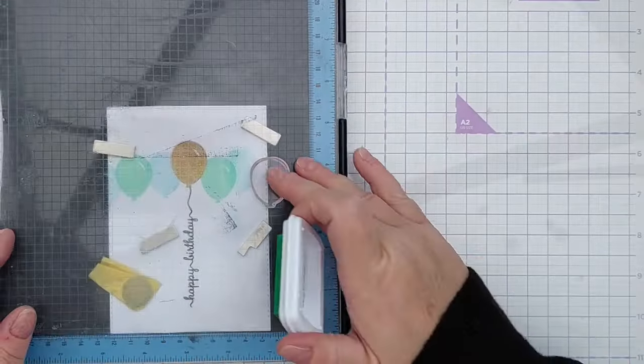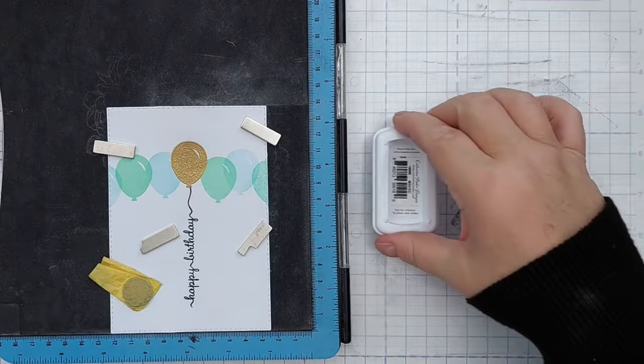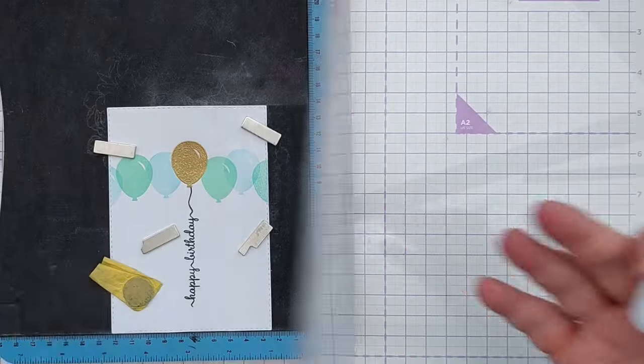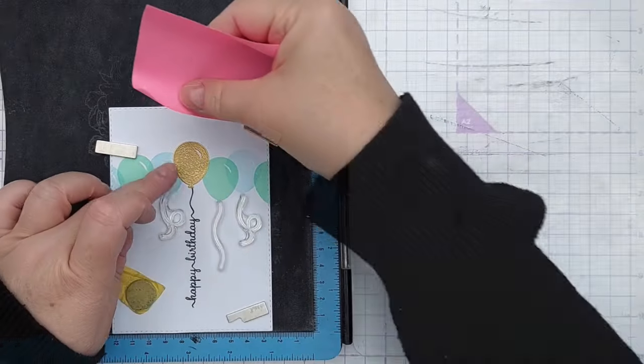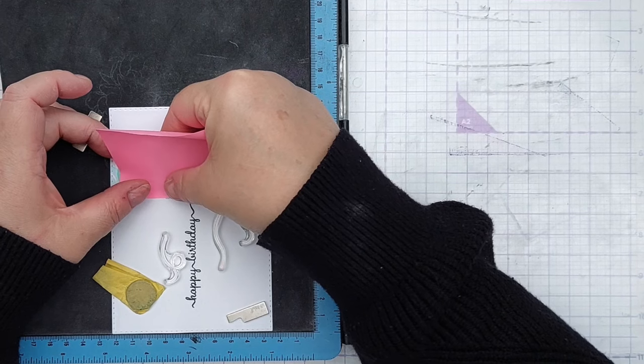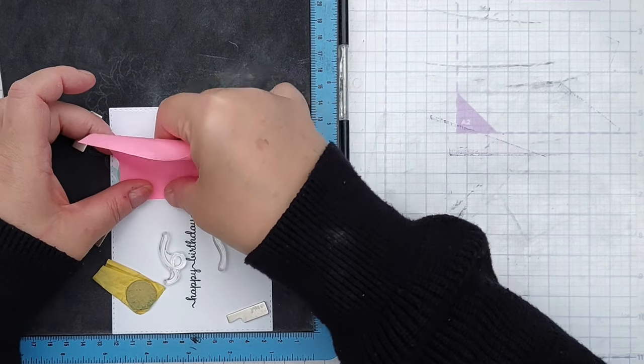So I found some photopolymer balloon string stamps and stamped those in Pebble Catherine Pooler ink, which is a grey, so they're definitely in the background and the happy birthday string stands out really well.